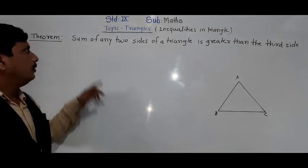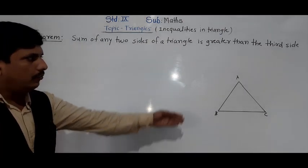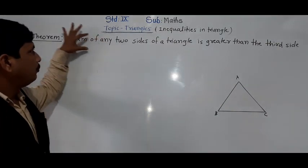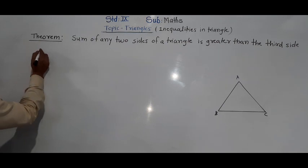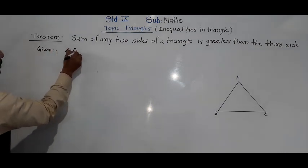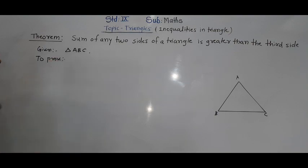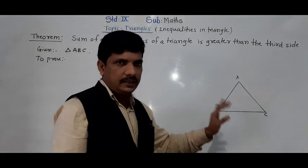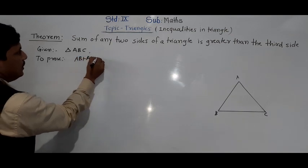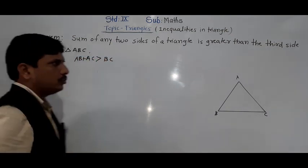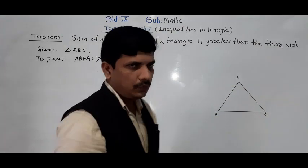We are going to see now: the sum of any two sides of a triangle is greater than the third side. Triangle ABC is given. What we have to prove is the sum of any two sides is greater than the third side. So from that we can write: given triangle ABC, to prove AB plus AC is greater than BC. That is our target which we are going to prove.